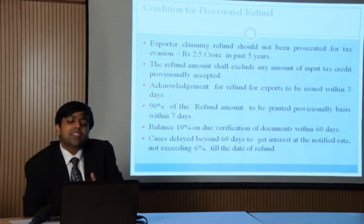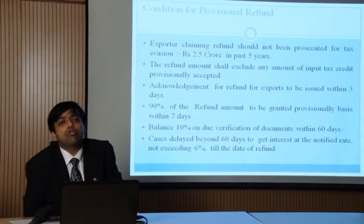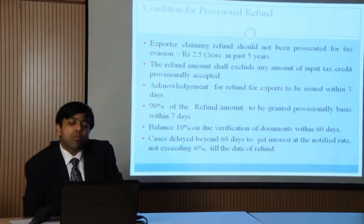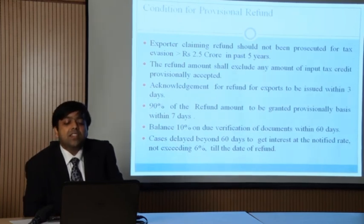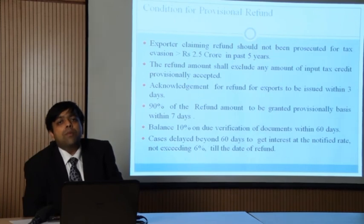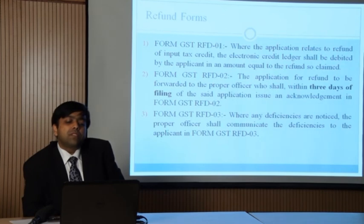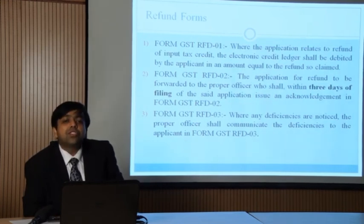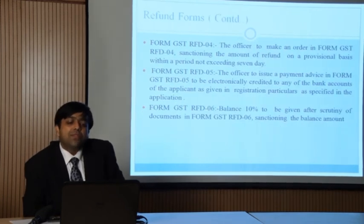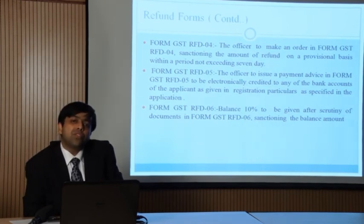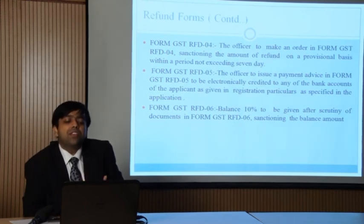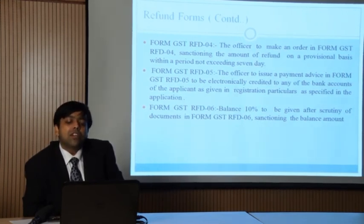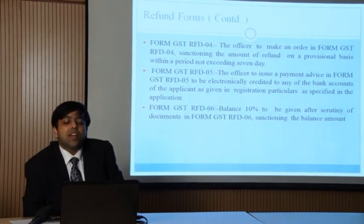The balanced 10% will also be available at that time, and people who have defaults of more than 2.5 crores can also get their refunds subject to conditions which the commissioner may enforce. In cases delayed beyond 60 days, interest will be paid at a notified rate not exceeding 6%. Refund forms: RFD 01 — application to be filed; RFD 02 — acknowledgement for filing application; RFD 03 — deficiencies to be pointed out; RFD 04 — order sanctioning provisional refund within 7 days; RFD 05 — advice that money has been credited to your bank account; RFD 06 — sanctioning the balance 10% refund after scrutiny of documents.